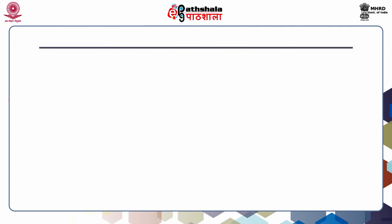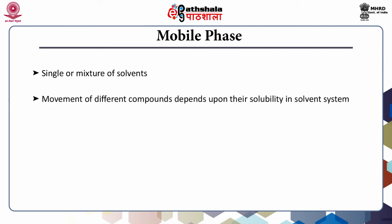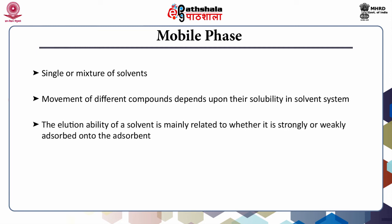The next component of TLC is the mobile phase. The mobile phase for TLC can be a single solvent or preferably a mixture of solvents. Since separation depends upon the distribution of compounds between the stationary and mobile phase, the solvent should show high selectivity in its ability to dissolve the substances being separated. The movement of different compounds depends upon their solubility in the solvent system, and the eluting ability of a solvent is mainly related to whether it is strongly or weakly adsorbed onto the adsorbent. The commonly used adsorbents in TLC — silica and alumina — are highly polar.